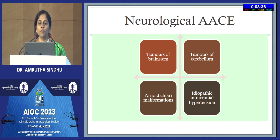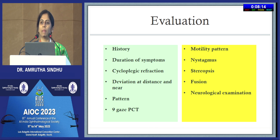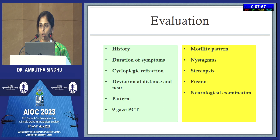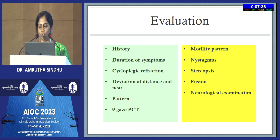For evaluation: take a brief history looking for excess gadget usage, near work, recent stress, and recent illness. Document the duration of onset as the management strategy depends on this. Perform thorough cycloplegic refraction to pick up any hypermetropia or myopia. Do a complete prism cover test measuring deviation for distance and near. Look for patterns, perform nine-gaze PCT, check for abduction incompetence, motility, and any nystagmus pointing to neurological cause. Document stereopsis and fusion, and perform a thorough neurological examination.